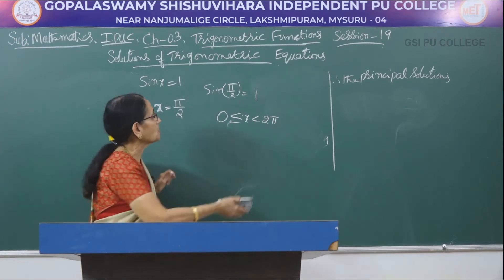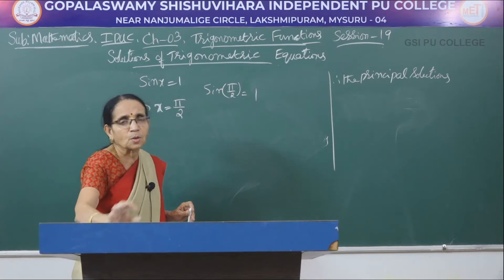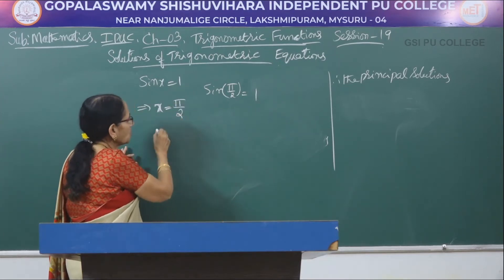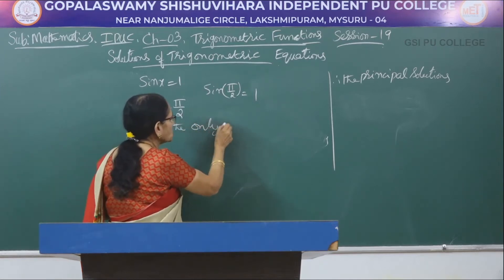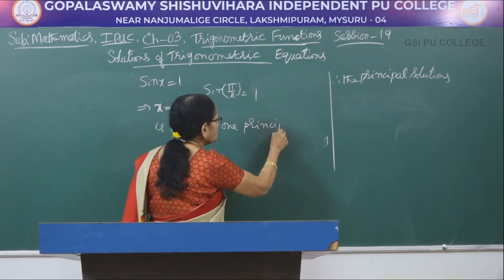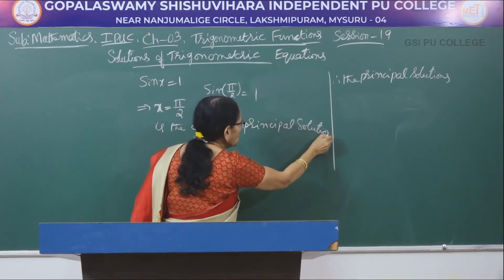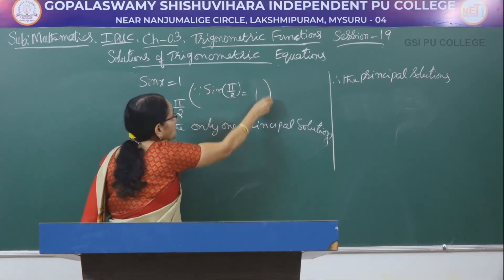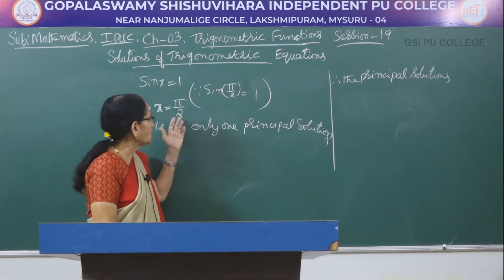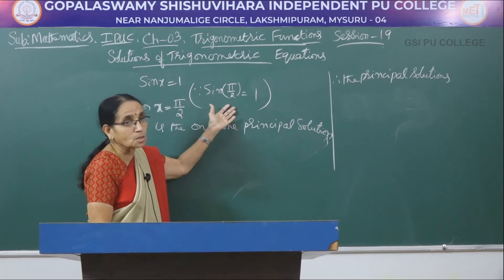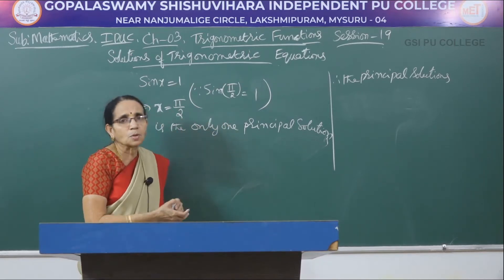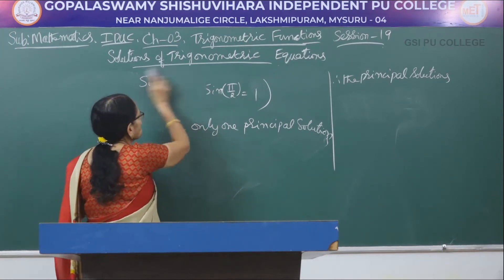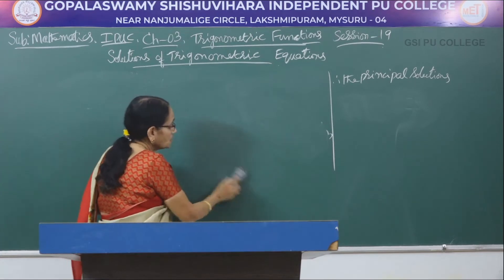Therefore sin x = 1 implies x = pi/2, since sin(pi/2) = 1. This particular equation has only one principal solution. Only very few equations are given like this — sin x = 1 has only one solution.